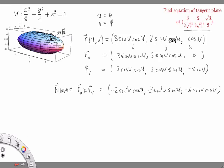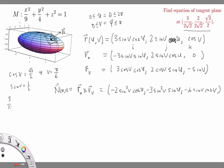Comparing the third coordinates of the general parameterization with our point, I get cosine of V equals root three over two. U is bounded between zero and two pi, and V is bounded between zero and pi. So cosine of V equals root three over two implies V equals pi over six. We know what V is, and now we use the first coordinate to find U. Since sine of V equals one-half, the first coordinate gives three-halves cosine of U equals three-halves times one over root two, which implies U equals pi over four.